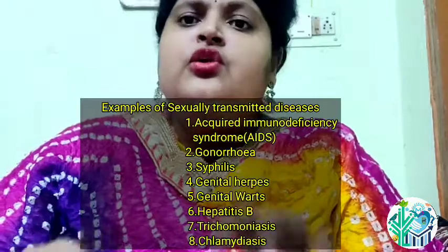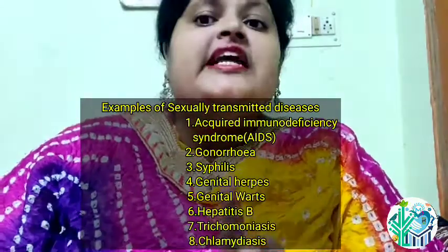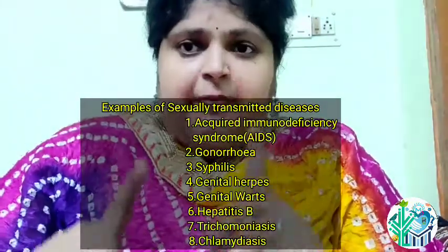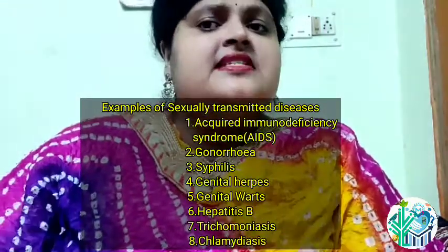To summarize, the examples of sexually transmitted diseases are: Acquired Immunodeficiency Syndrome (AIDS), gonorrhea, syphilis, genital herpes, genital warts, hepatitis B, trichomoniasis, and chlamydiasis. These are also called venereal diseases or pelvic inflammatory diseases.